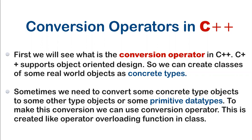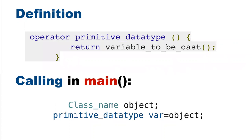In C++ object-oriented programming, it is used to create real world objects as concrete types. Sometimes we want those concrete types to behave as primitive data types, so we use a conversion operator for this. Its definition will be like: first we have the keyword 'operator', then we write the primitive data type we want our variable to cast into, then in the function we return that variable. In the main function, we create the object of that class, then declare a primitive data type variable which will receive the returned value.